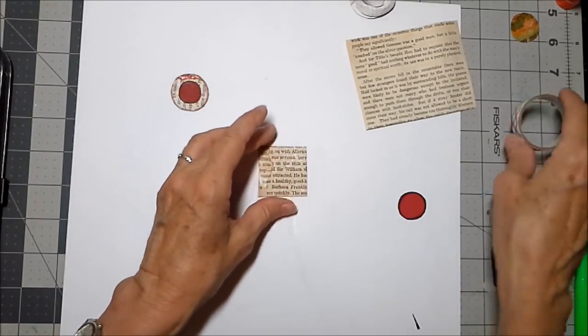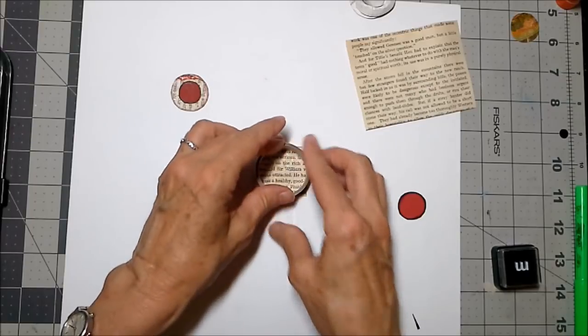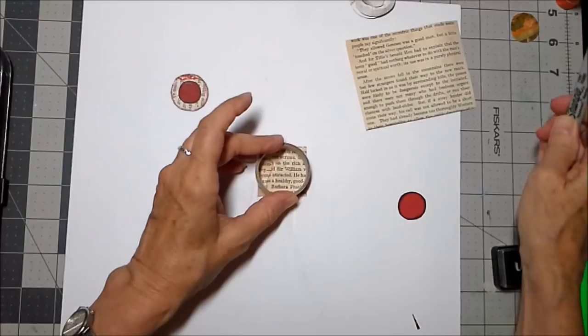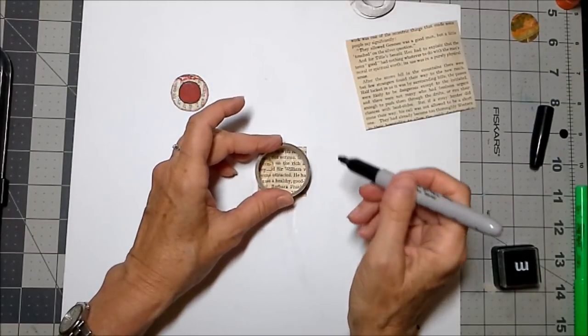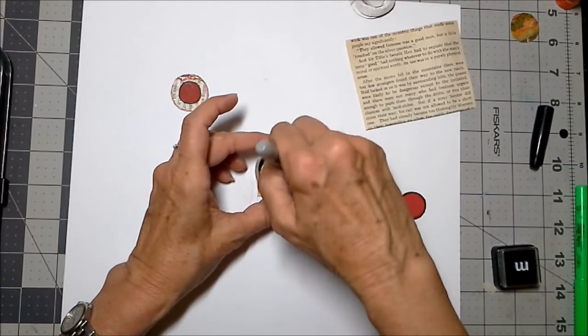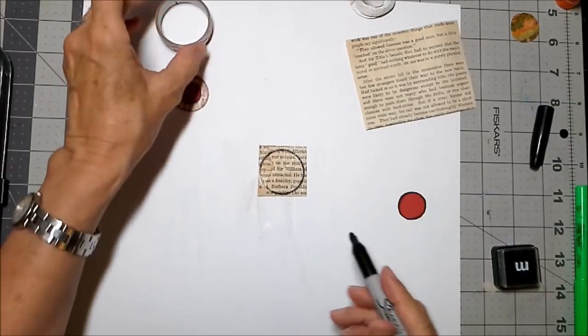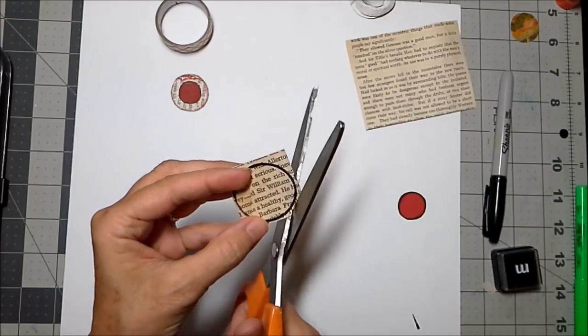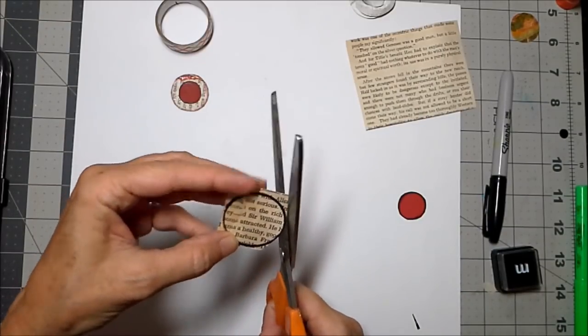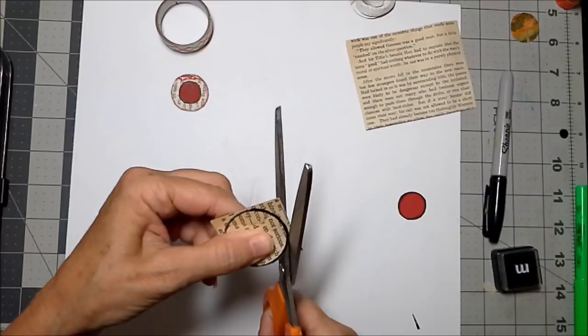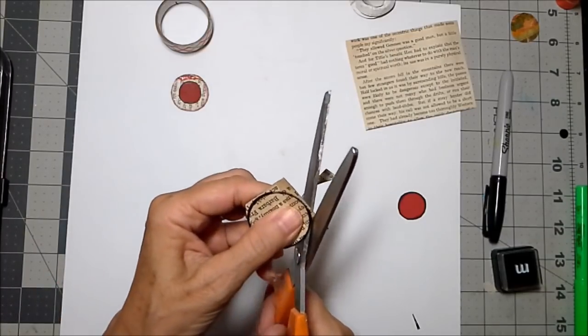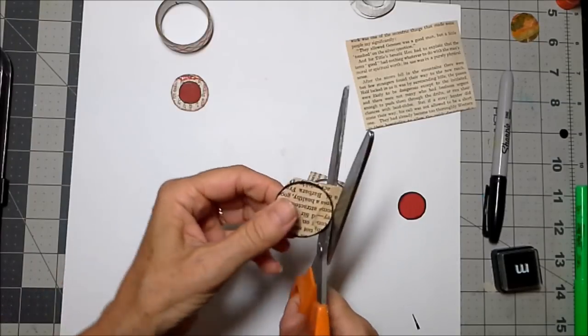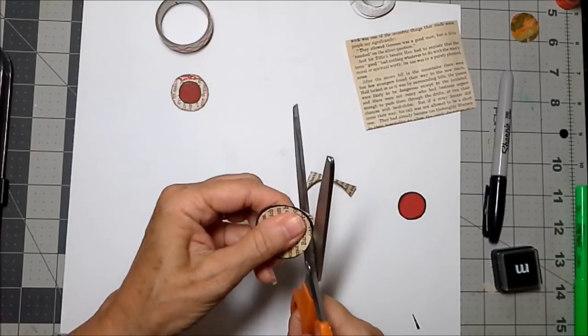We're going to just draw a circle and I need my sharpie. We will draw a circle right like that. We're going to cut that circle out. Buttons are so much fun to make. You can do them with different colors, you can do them with different textures, you can layer them. They're really easy and fun to play with.